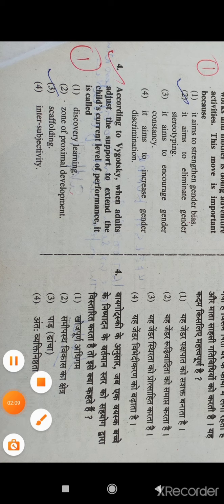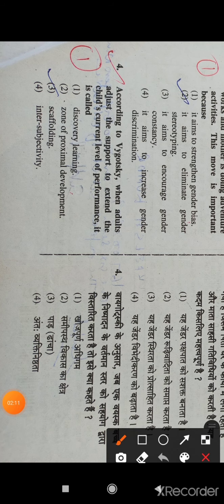If adults adjust the support to extend the child's current level of performance, this is a very important question by Vygotsky. Option number three, scaffolding, which is the right answer. Scaffolding happens when, for example, a child starts playing a cycle so parents or their trainer gives them a little support.